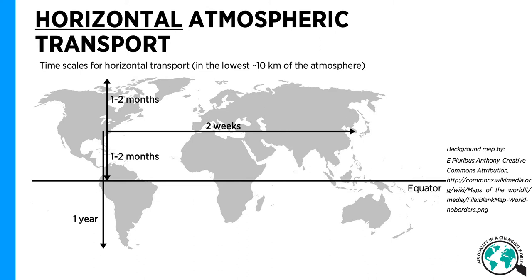It will take about one to two months for a compound emitted at around a latitude of 40 degrees to reach either the North Pole or the equator, while it would take significantly longer to reach the South Pole as the compound needs to pass the intertropical convergence zone.